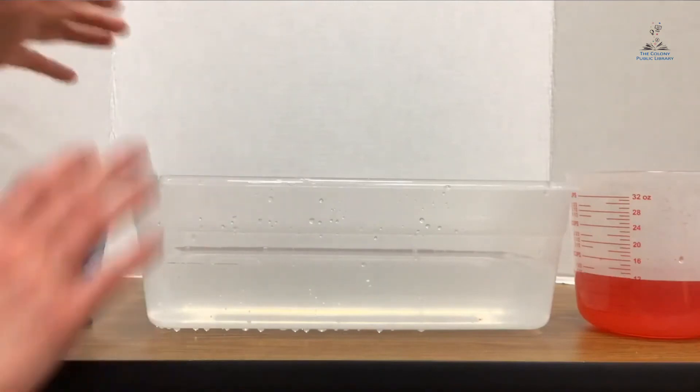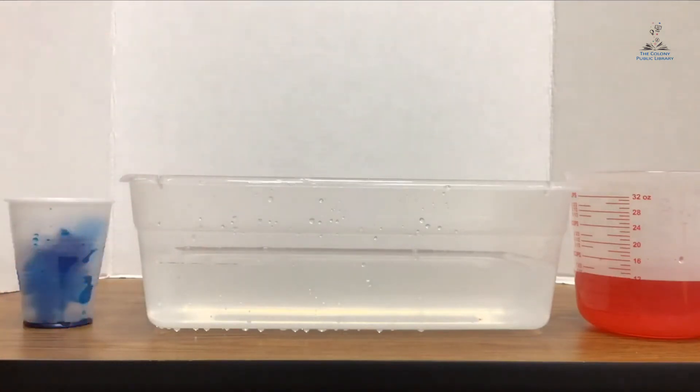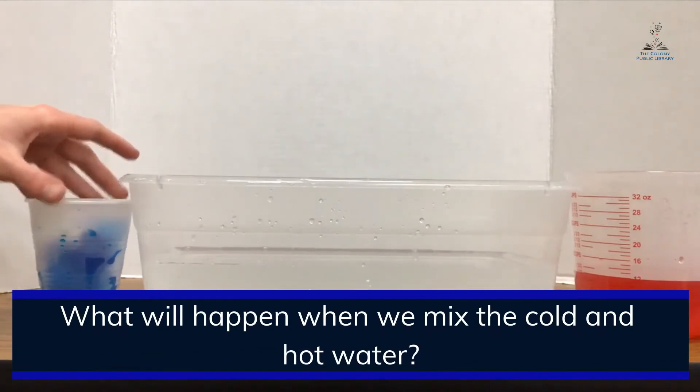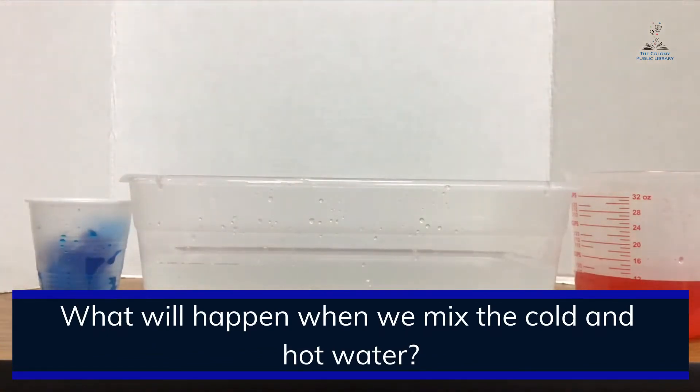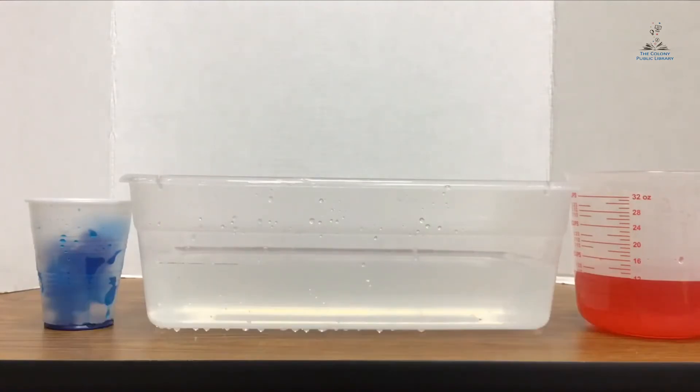Alright, so before we get started on our experiment, let's make a hypothesis. Do you remember that word hypothesis? That means a scientific guess. So we need to make a guess on what will happen when we mix the blue cold water with the red hot water. You can either write this down in a scientific notebook, you can tell an adult that's with you or your sibling, or you can keep it in your head. But either way, let's think about a hypothesis. Let's think about what will happen when these two different temperatures of water will mix. Alright, do you have one? Okay.